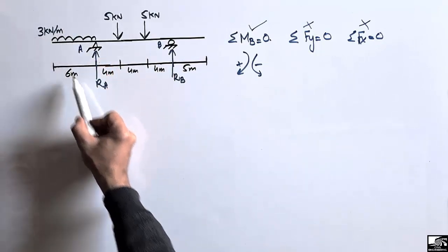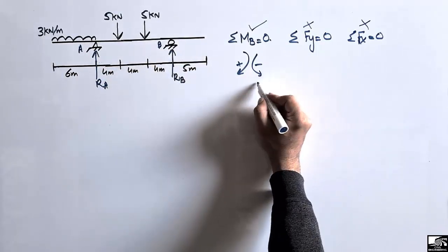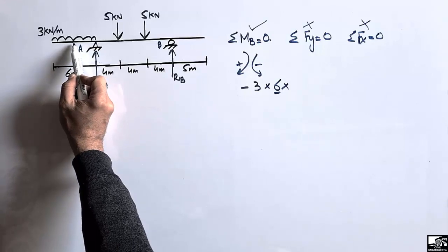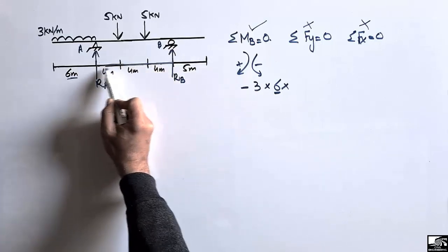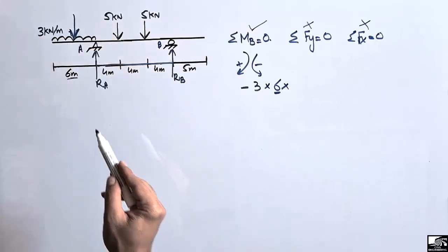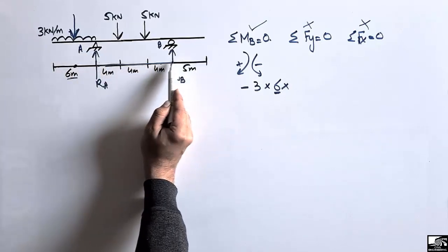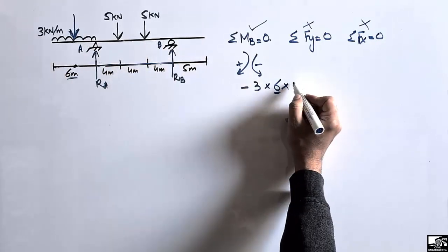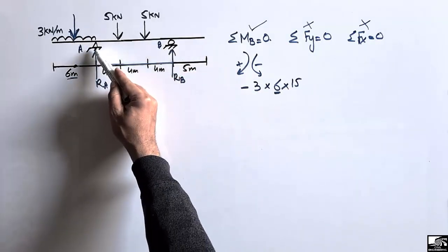The 3 kN/m distributed load over 6 meters creates an anti-clockwise moment about point B, so it is negative: 3 × 6 (the distributed length) multiplied by the moment arm. The moment arm for this load is the distance to the centroid of the distributed load, which is half of 6 (i.e., 3 meters) plus the remaining distance of 12 meters to point B, giving a total moment arm of 15 meters. So this anti-clockwise moment term is −3 × 6 × 15.